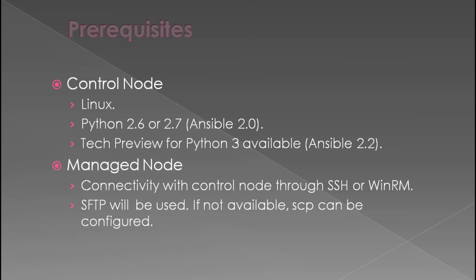The prerequisites to set up Ansible involve two components: a control node and a managed node. The control node is like the Ansible server — it requires a Linux machine and Python 2.6 or higher. Ansible 2.0 has a tech preview for Python 3. For the managed node, SSH or WinRM connectivity is required to push code to the target machine. Ansible uses SFTP; if not available, SCP protocol can be configured instead.